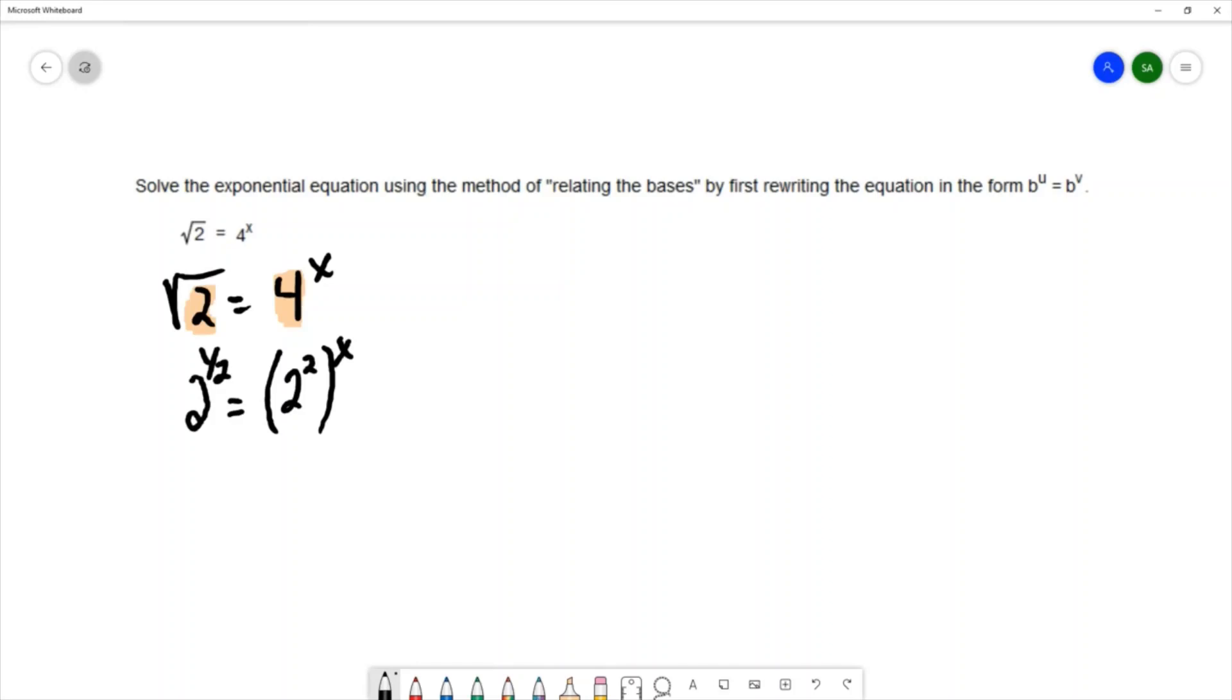2 to the one half power is the same thing as square root of 2. I'm almost there to write the equation in this format. I just need to do a little simplifying.